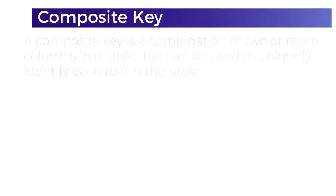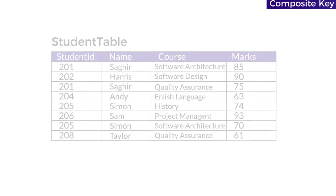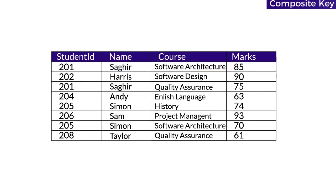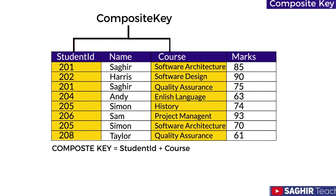We are asked to get the marks of student ID 201. The database will be confused because student 201 has opted not only for software architecture but quality assurance as well. In this case, we cannot have one student ID column as a primary key — we need the course column to be a primary key as well.